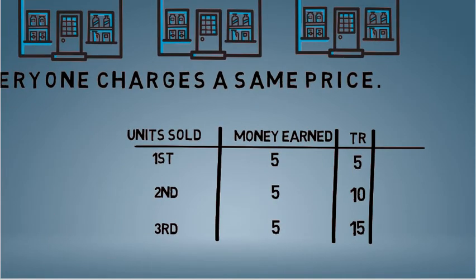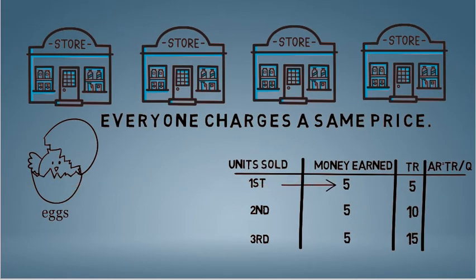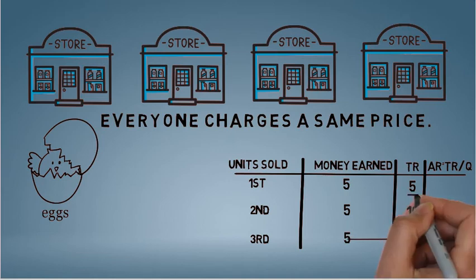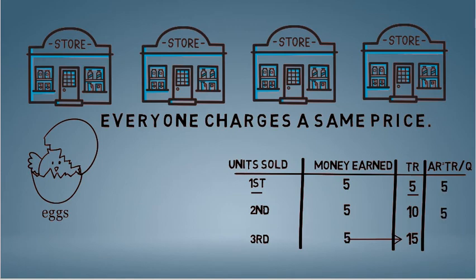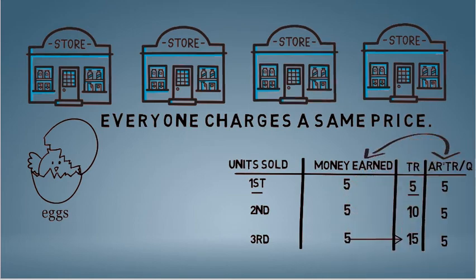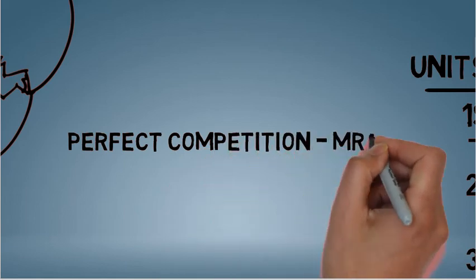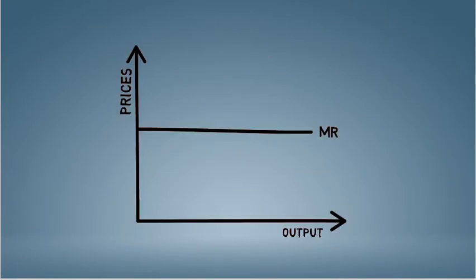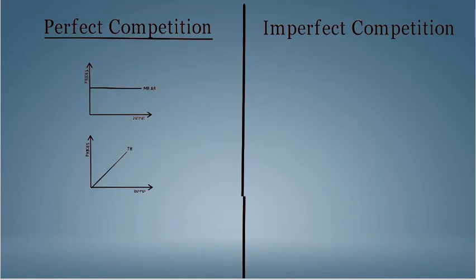By now, we must have understood that average revenue will be total revenue divided by output. In perfect competition, the marginal revenue is constant, say rupees 5. Hence, the total revenue will increase at a uniform rate like 5, 10, 15, 20. If you now divide total revenue by output, you will end up getting average revenue of 5. You see, you will always get average revenue equal to marginal revenue in perfect competition. This is why average revenue curve will overlap the marginal revenue curve. You can pause the video and think about this if you found it difficult to understand.